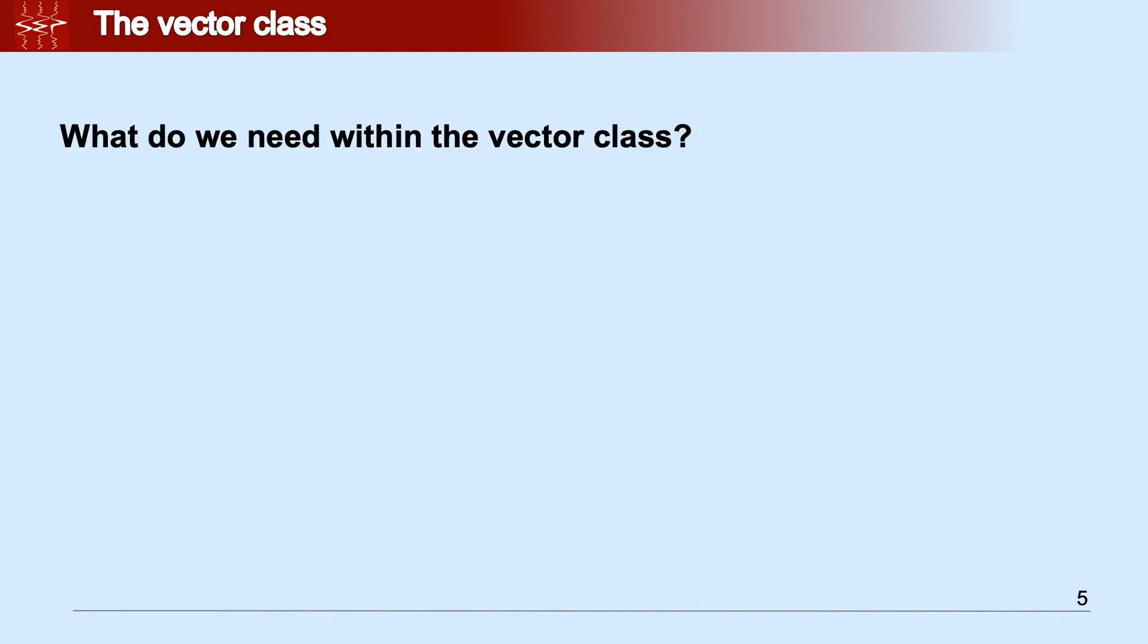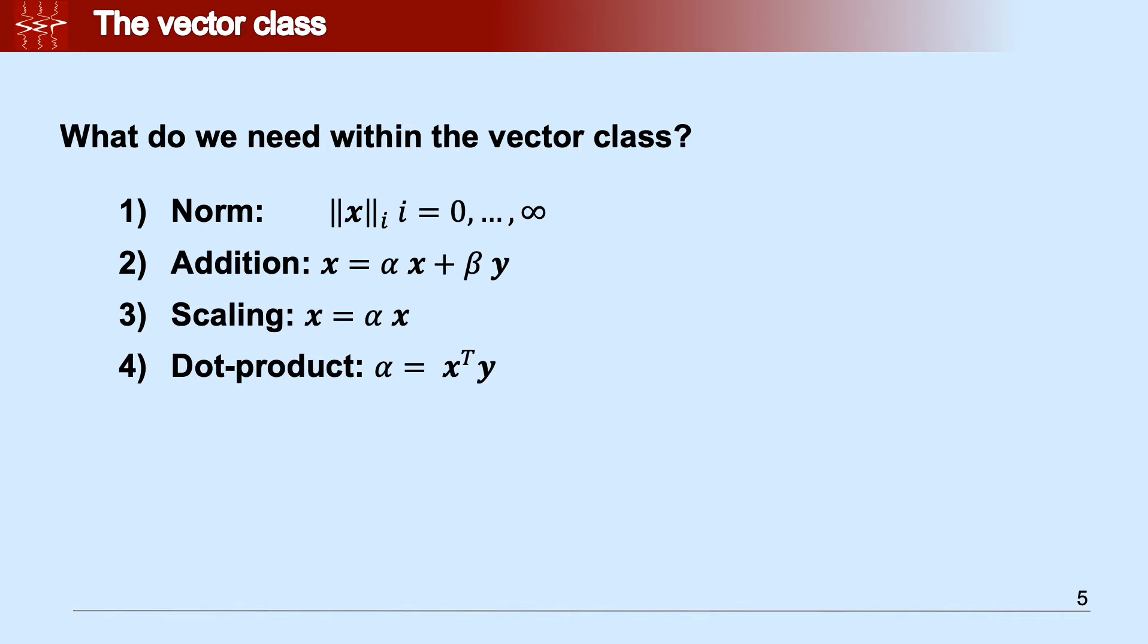Let's start with the vector class. What do we need it to do? Once we have an instance of a vector, we possibly need to compute the norm, maybe add two vectors, possibly scale the vector by a scalar, and compute the dot product of two vectors.